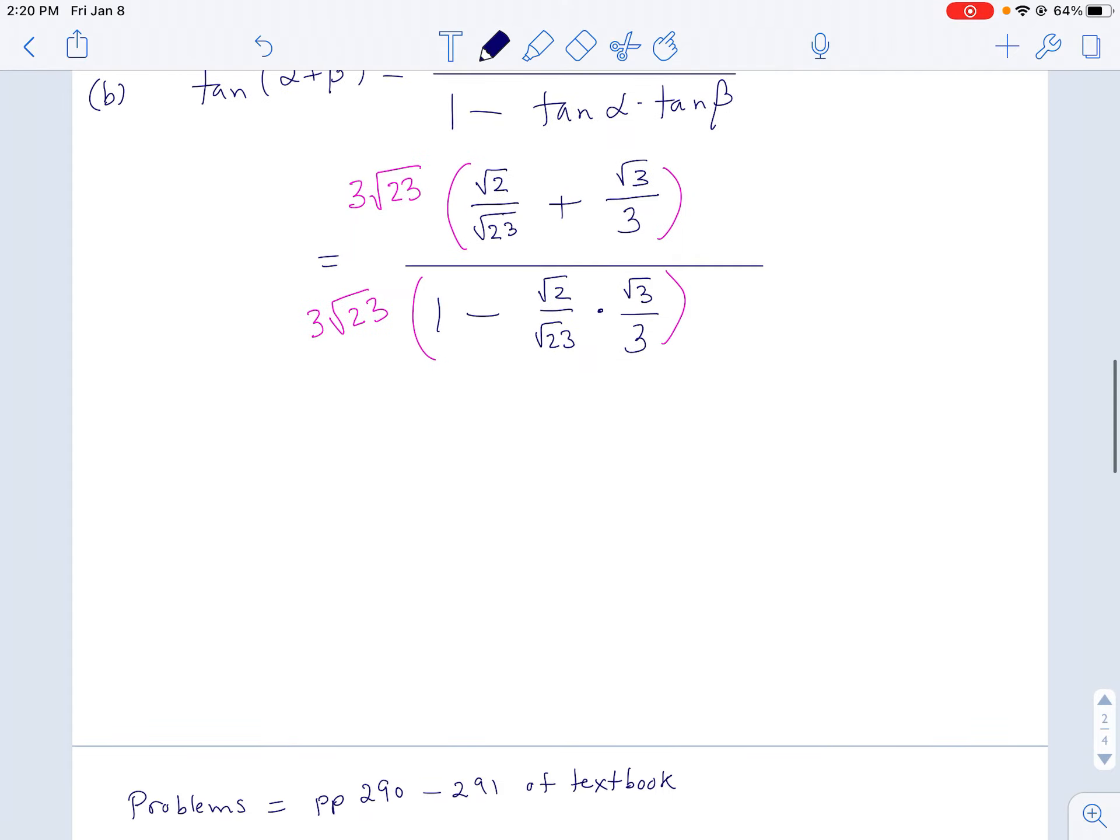And by the way, this is where it just gets really ugly. If you didn't think it was ugly yet, it's ugly now. Okay. So when I distribute that 3 root 23 to the numerator,